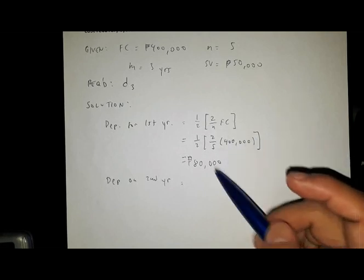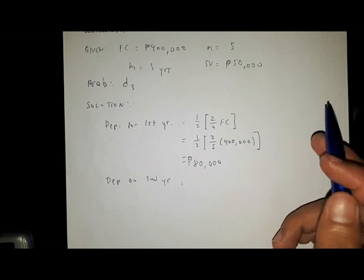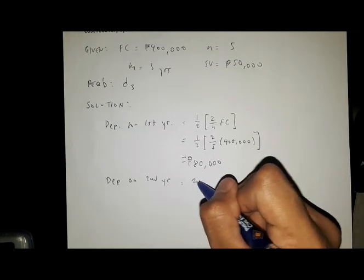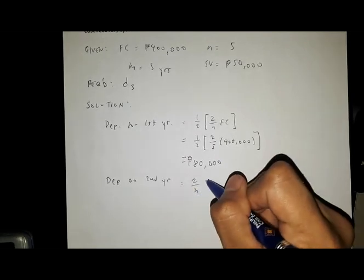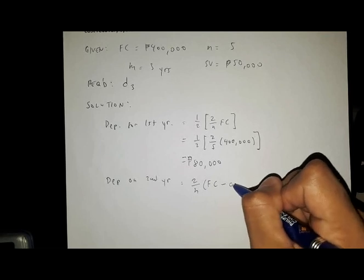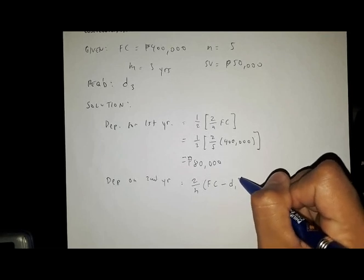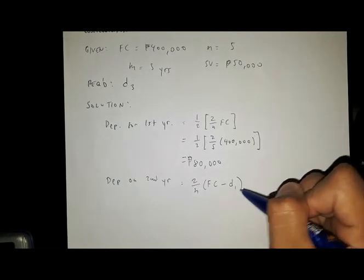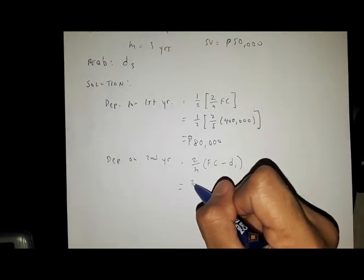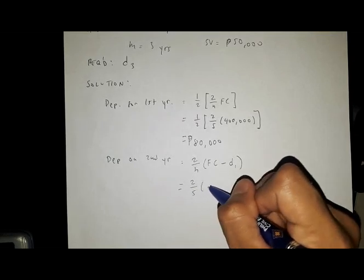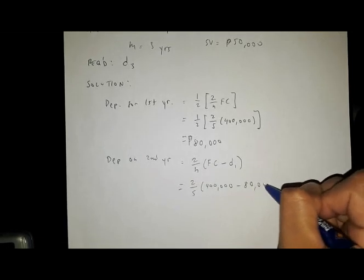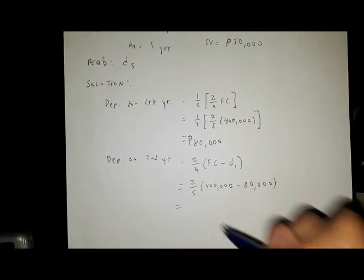We subtract the previous depreciation from FC for the succeeding depreciation. The formula is 2 over n times (FC minus D1). By substitution, this becomes 2 over 5 times (400,000 minus 80,000).